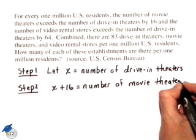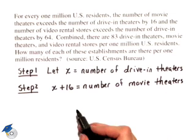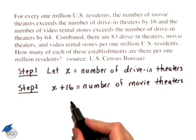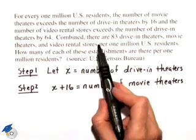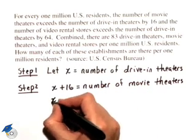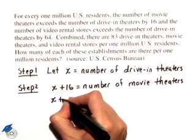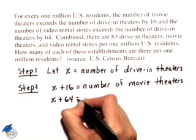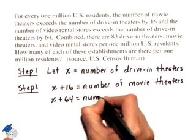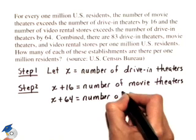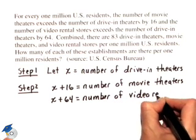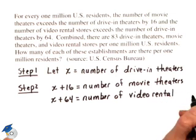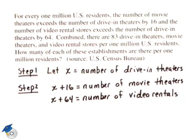We also have one more quantity. Remember, we were given information about the video rental stores. The number of video rental stores exceeds the number of drive-in theaters by 64. So if we start with X, the drive-in theaters, and add 64 to it, we should equal the number of video rental stores. I'll just abbreviate it as video rentals. Now in step 3,